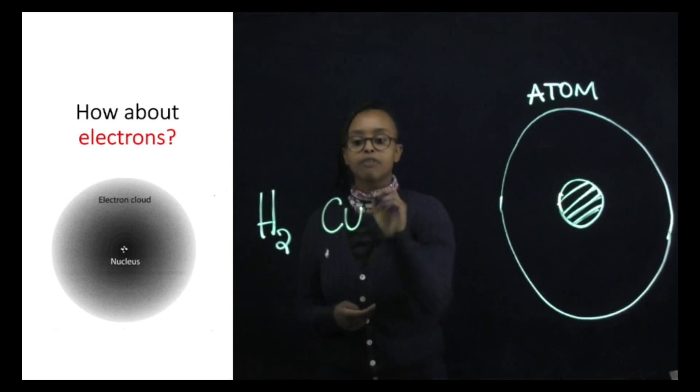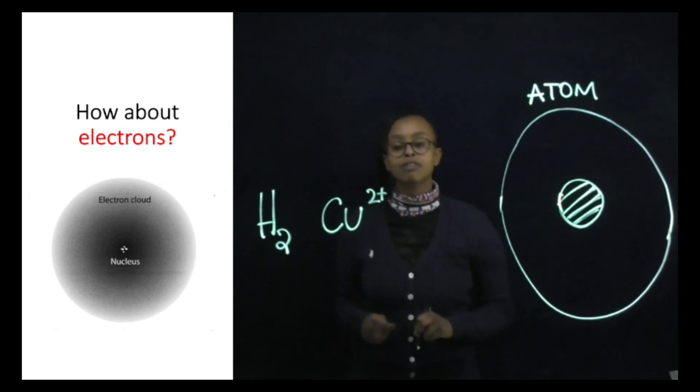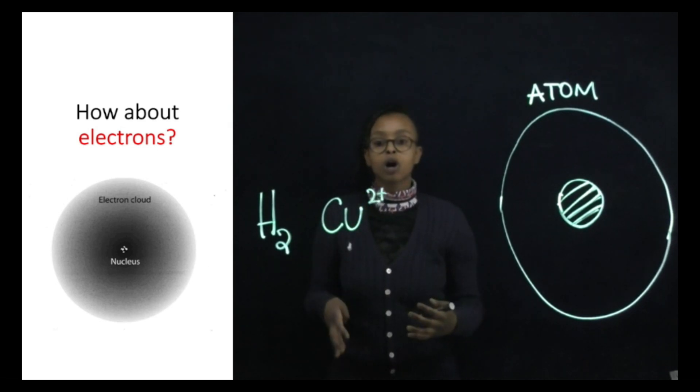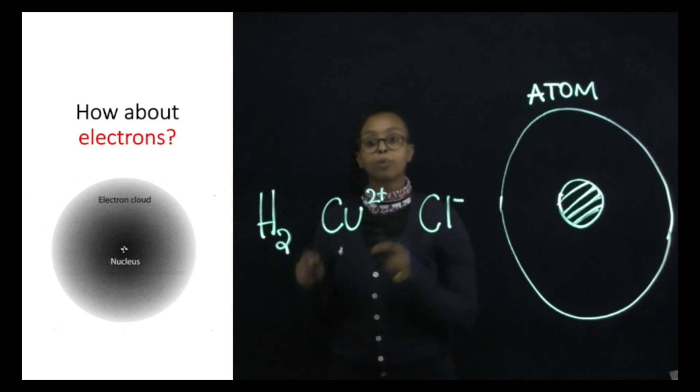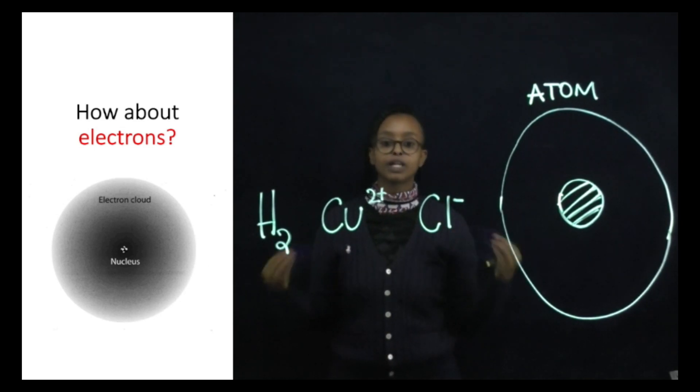If we were to have something written like copper two plus, that means there are two more protons than there are electrons. And if we were to see something like chlorine with a minus charge, that means there's one more electron than there are protons. Remember, the atomic number would just be the electron number as well, as long as there are no charges written on top.